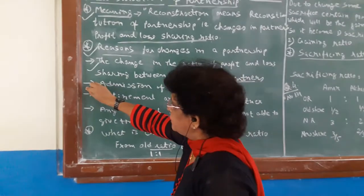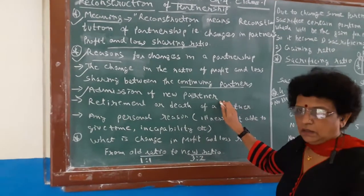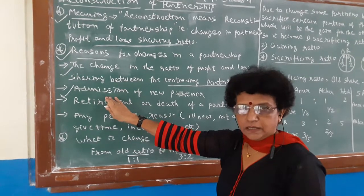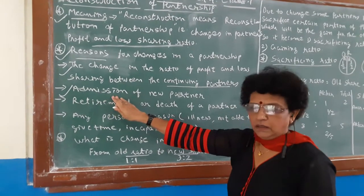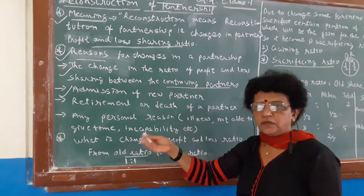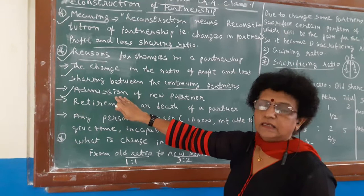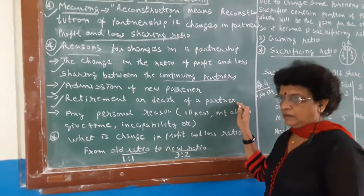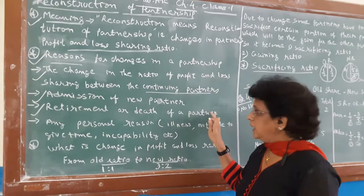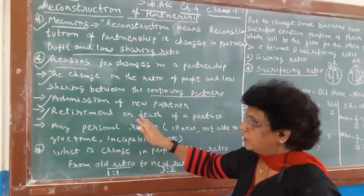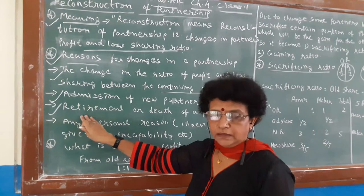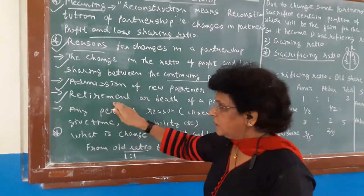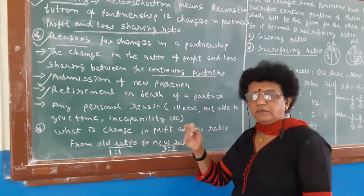This may be one of the reasons. The second reason is when existing partners are exiting and they need a new fifth partner, so they are admitting a new partner. The existing partners have to sacrifice a little portion to accommodate the one who is entering the business, so admission is a reason. Like that, retirement or death of a partner is another reason. A partner may die or partner may retire due to age, capability, or any other reason.